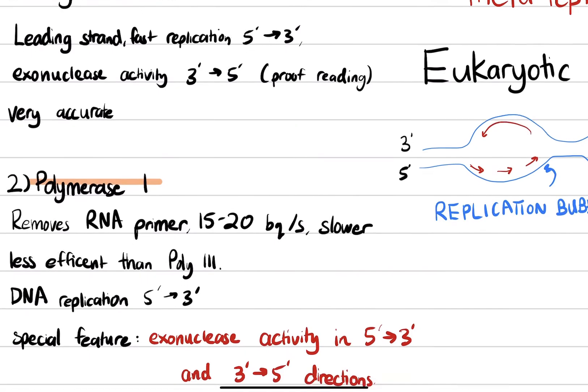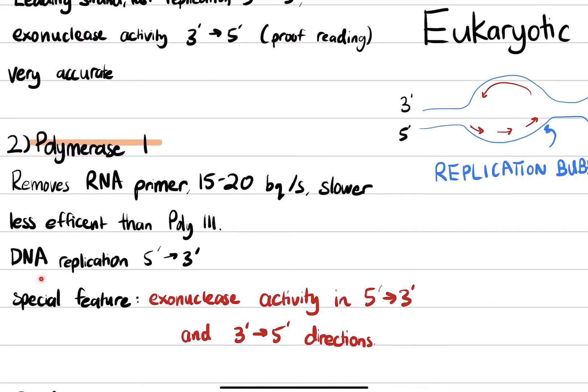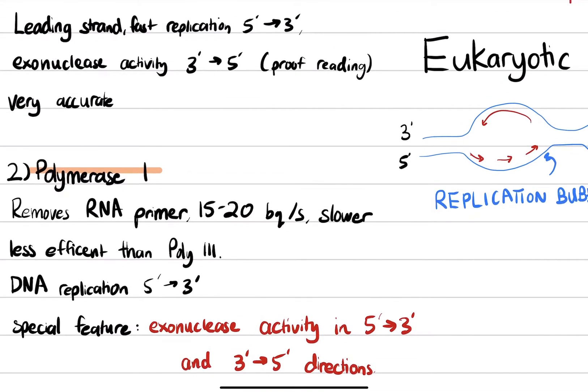Then we have DNA polymerase I. DNA polymerase I is responsible for removing RNA primers, and it's basically 15 to 20 base pairs. It's pretty much slower and less efficient than polymerase III. DNA replication also happens in the 5' to 3' end for DNA polymerase I. But the special thing about DNA polymerase I is that it has exonuclease activity in both directions, the 5' to 3' end and the 3' to 5' end.